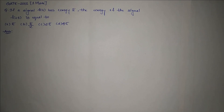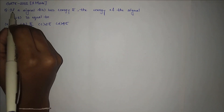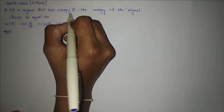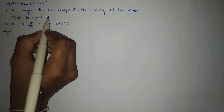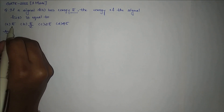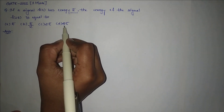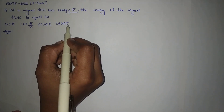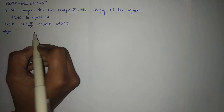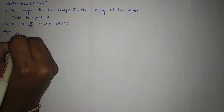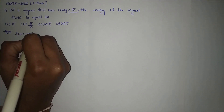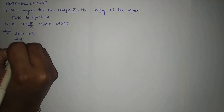Hi everyone. In this video I am going to solve a GATE 2001 question. The question is: if a signal f(t) has energy e, the energy of the signal f(2t) is equal to? The given options are e, e/2, 2e, and 4e. We will first solve the given problem by general method and then go for a shortcut method.